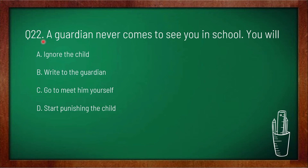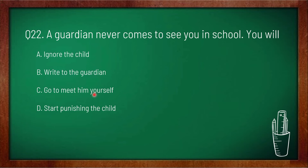Question 22: a guardian never comes to see you in school — what will you do? Option A: ignore the child, option B: write to the guardian, option C: go to meet him yourself, option D: start punishing the child. The correct answer is option C — go to meet him yourself. When a guardian never comes to school, a teacher should go to meet him personally.